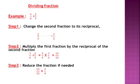Let's start the division of a fraction. For example: 5 over 6 divided by 2 over 3. There are three steps. Step 1 is to change the second fraction to its reciprocal. The second fraction is 2 over 3. The reciprocal of 2 over 3 is 3 over 2.